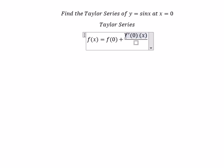That means the first derivative of the function at x equals zero, multiplied with x, and we have 1 factorial.